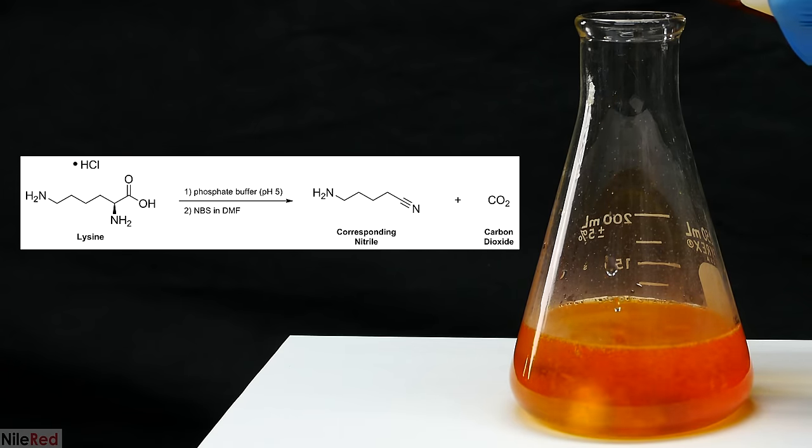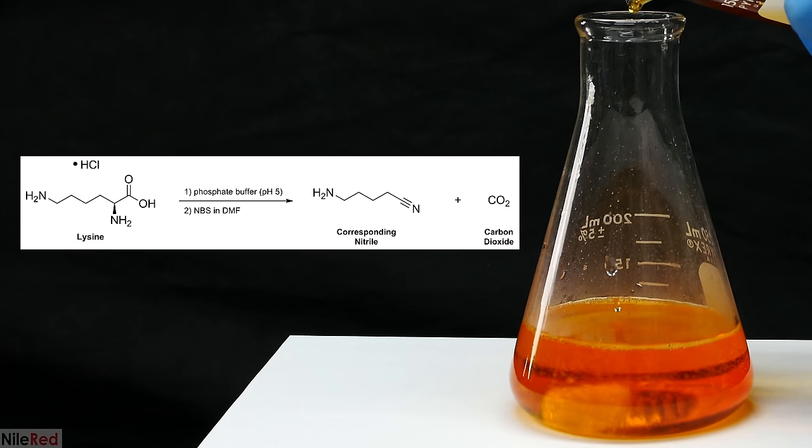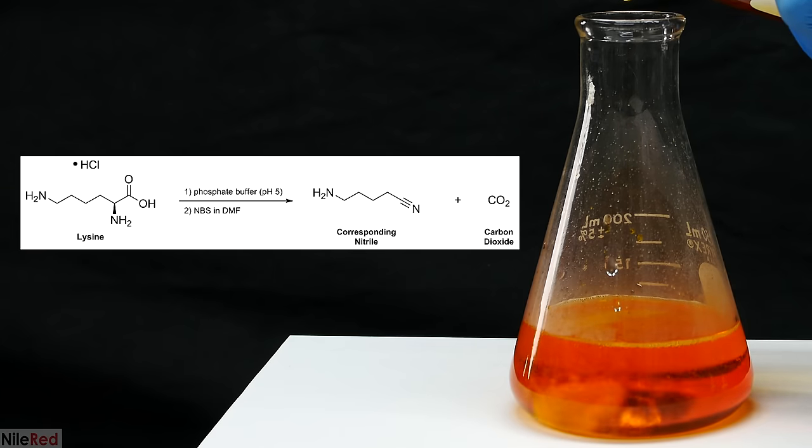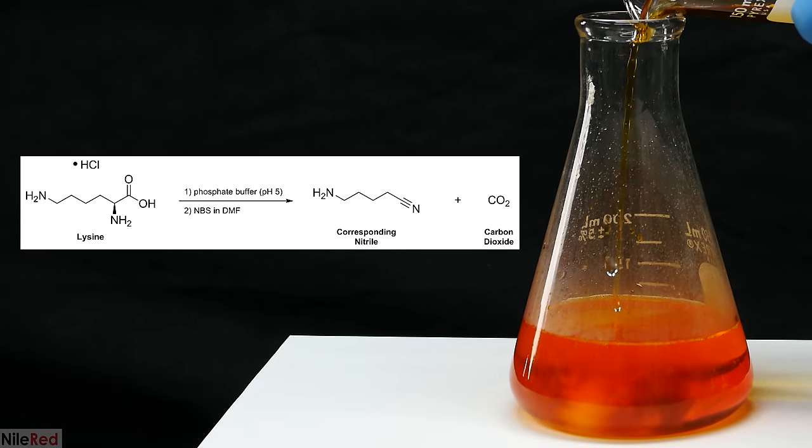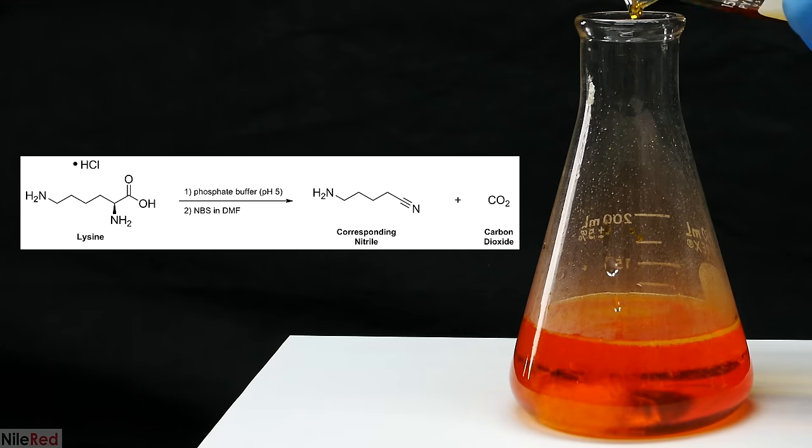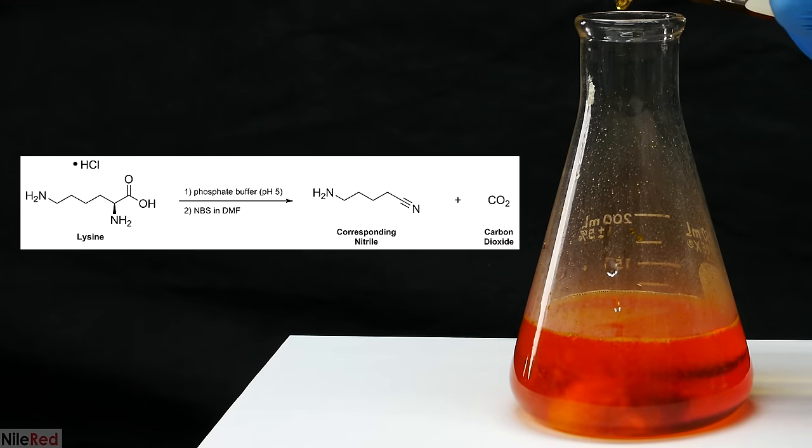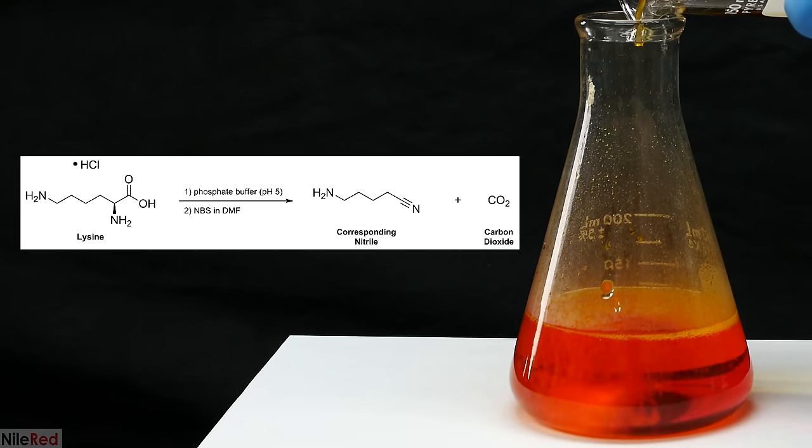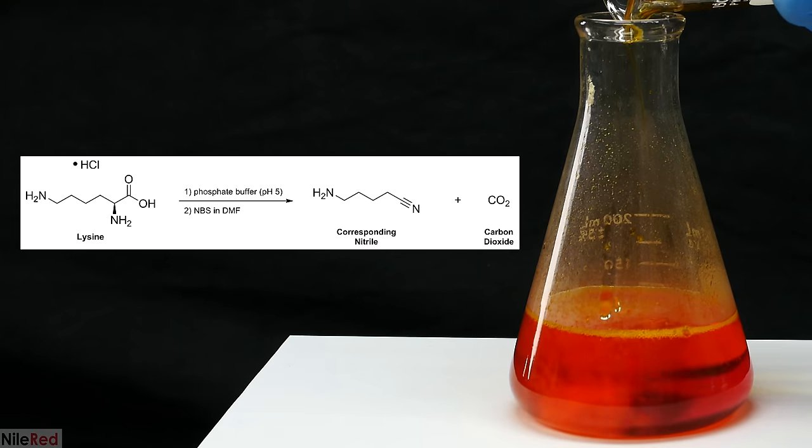According to the paper, this is the step that the pH buffer was important for, because if the pH wasn't controlled and kept around 5, it would produce an aldehyde instead of our desired nitrile. The procedure in the paper didn't say anything about adding it slowly, and I just chose to do this, but as I was editing and I re-read the paper, there was a mention in the introduction that they added the NBS solution dropwise.